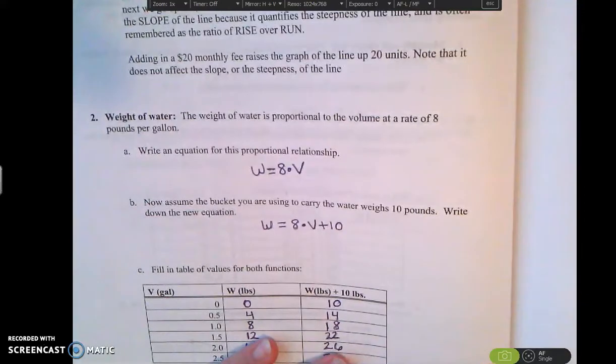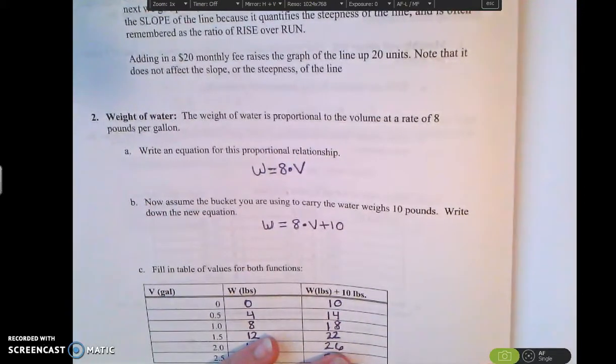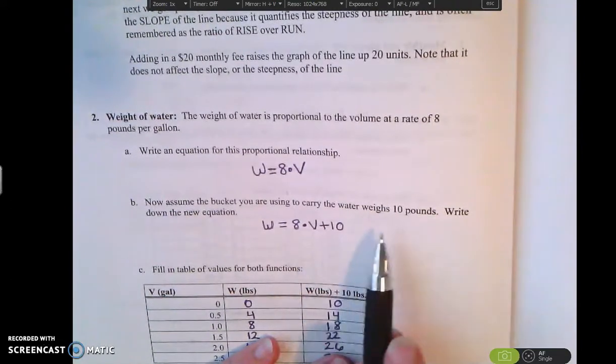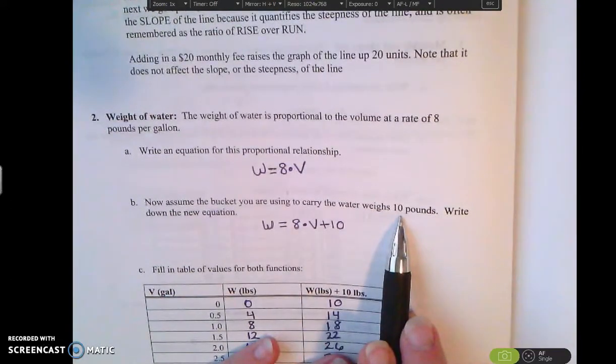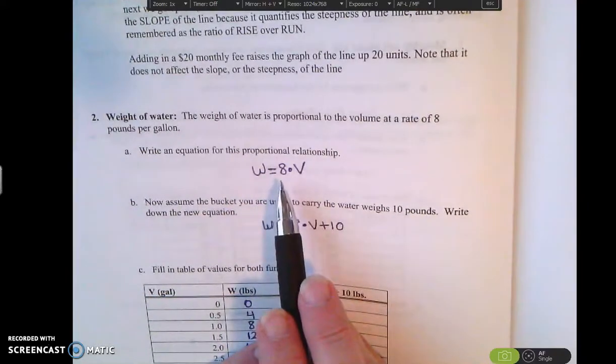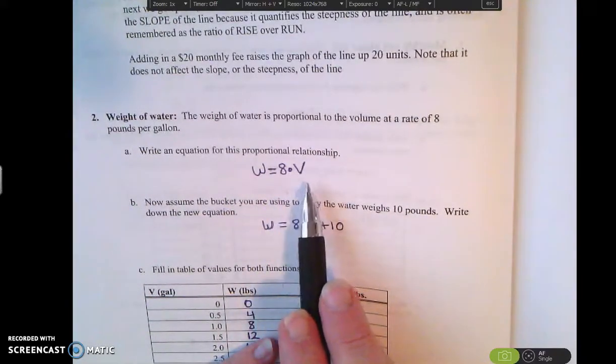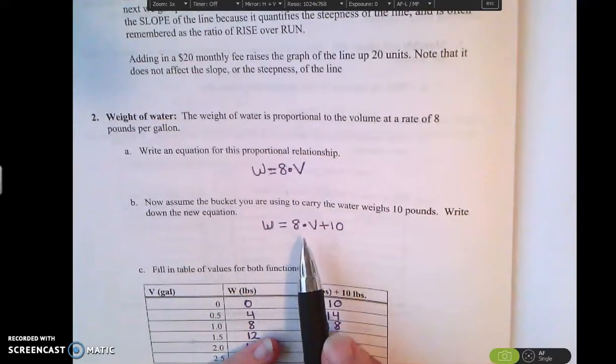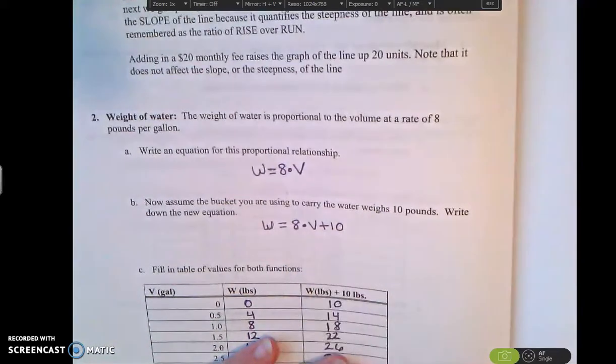So then what if I were to put a rock in the bottom of my bucket and my bucket started off weighing 10 pounds? So that means it started off with 10 pounds plus every gallon of water that I add is going to be another 8 pounds. So I'm adding 10 to my formula.